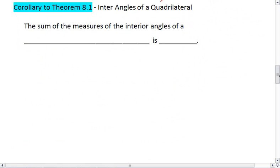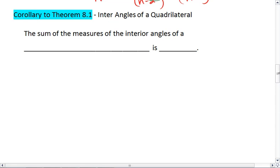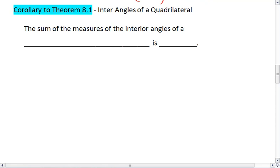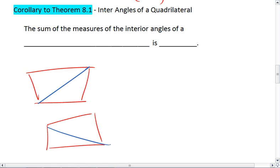This brings us to the corollary to theorem 8.1, interior angles of a quadrilateral. We know that we are specifically working with a four-sided figure, and this could be any kind of four-sided figure. Our quadrilateral will divide into two triangles, meaning the sum of its angles is 360 degrees.